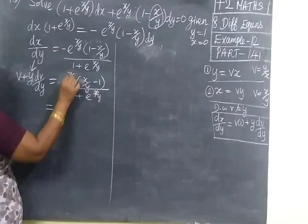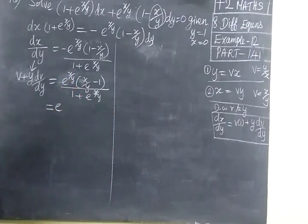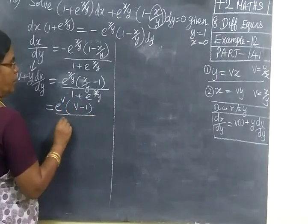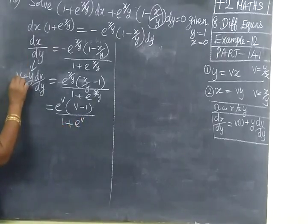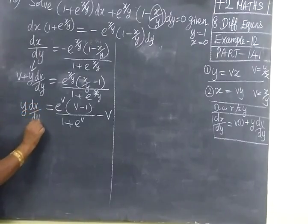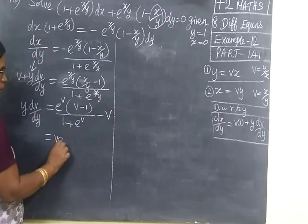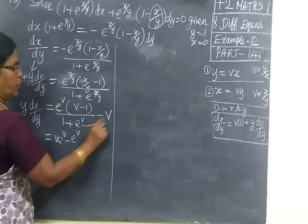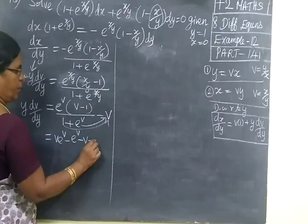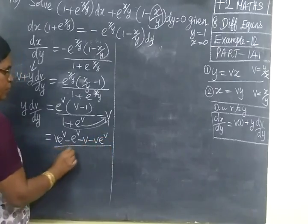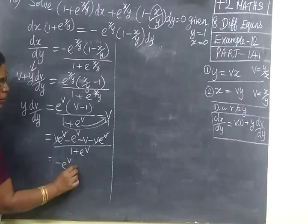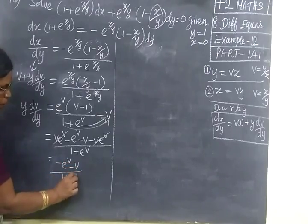For x by y you are substituting v. So this becomes e power v times (v minus 1) divided by (1 plus e power v). In the left side you can bring minus v to this side. So y into dv by dy equals: v·e power v minus e power v minus v minus v·e power v, all over (1 plus e power v). Plus and minus v·e power v cancel, so we get minus e power v minus v divided by (1 plus e power v).